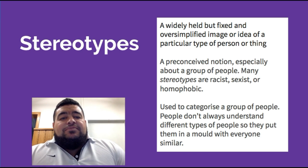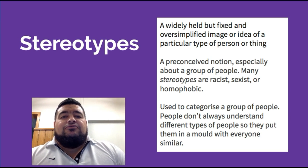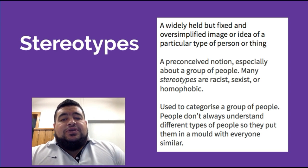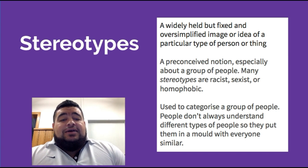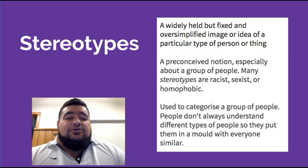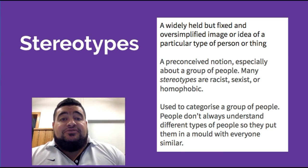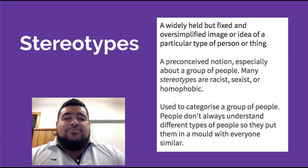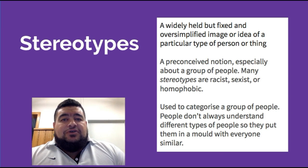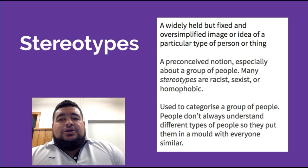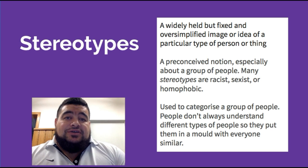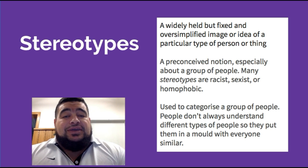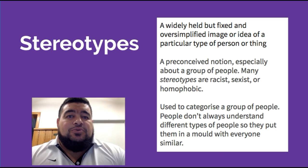Stereotypes are widely held but very oversimplified images or ideas of a person or group of people. A lot of stereotypes are very racist, sexist, or homophobic — even if they don't mean to be. They're used to categorize groups of people when people don't understand those groups, putting everyone into one bunch rather than treating people as individuals. Stereotypes can be very damaging, though they are sometimes used in research to identify trends for certain groups, even if that means making assumptions.